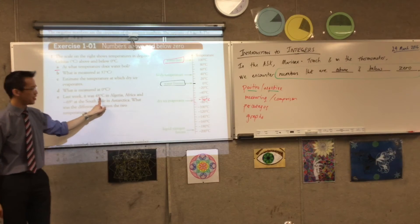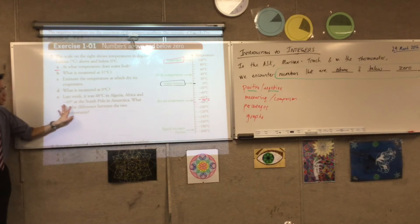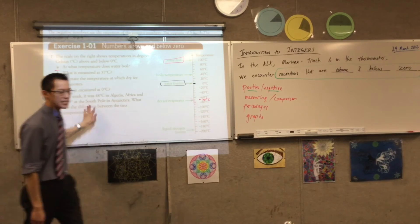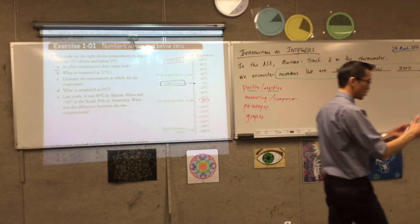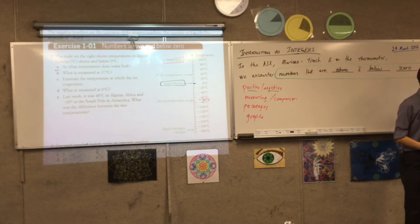It was 48 degrees in Algeria. Africa. And minus 69, negative 69 at the South Pole. What was the difference? Okay, now remember how I said, I would like you to, in a minute, draw this if you haven't already started. Okay?